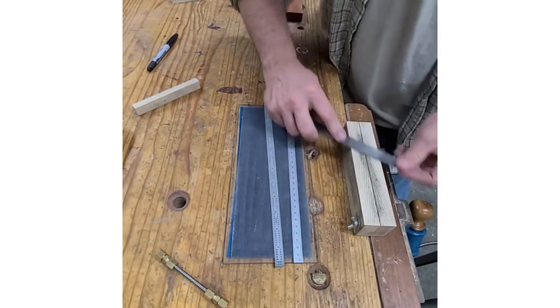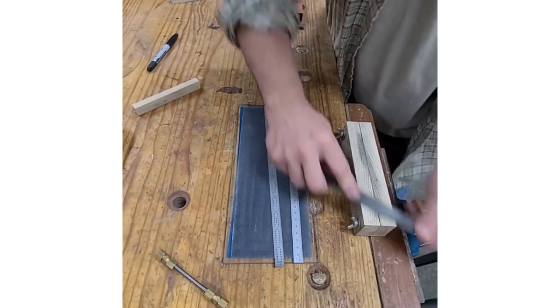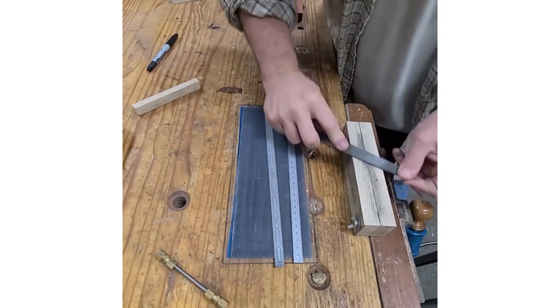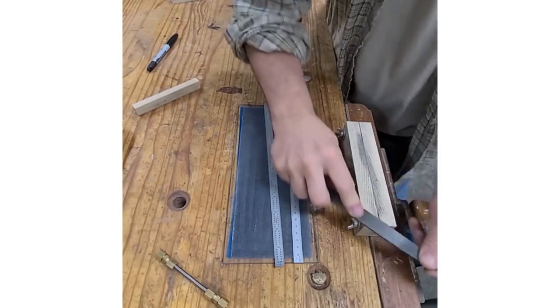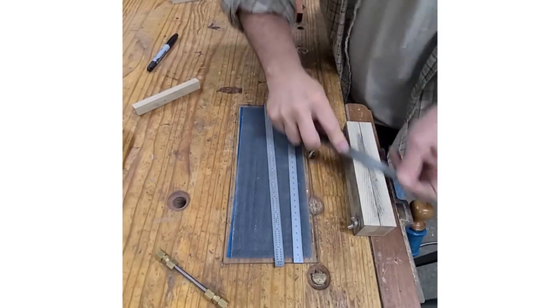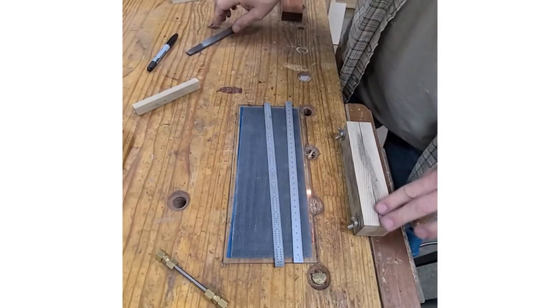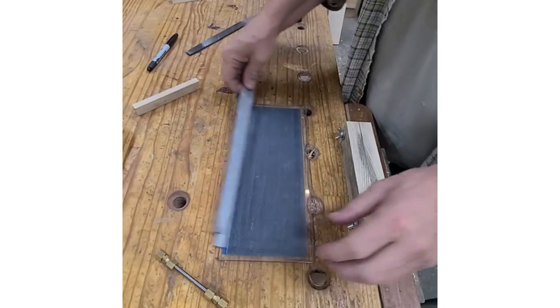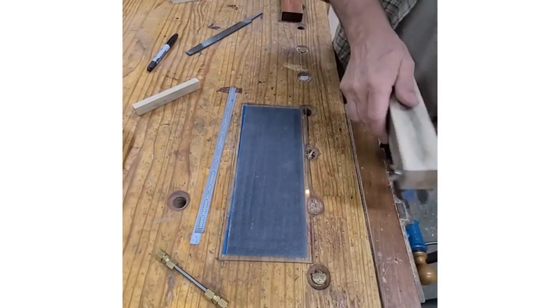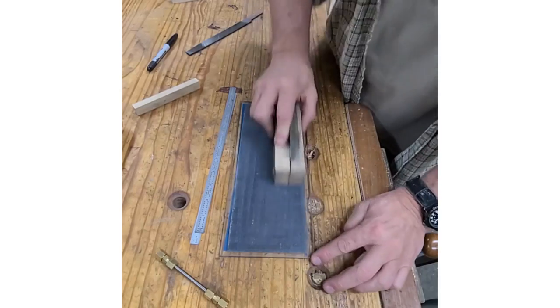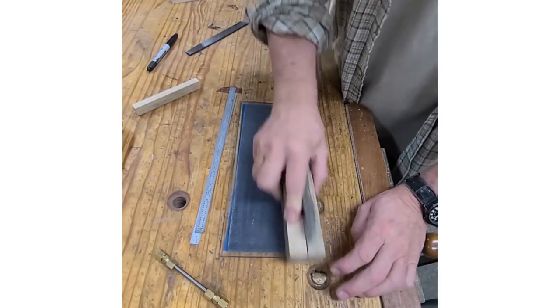I set my scraper on these two rulers and what this does is it helps me get an exact protrusion of the scraper above the vise, 20 thousandths, so I can feel it, it's nice and consistent. I'm going to drop that thing in my vise and file it. Basically you just want to file it till you get fresh steel all the way along. This is a brand new scraper so I got to take a little bit more off. Okay, got it, so now I see fresh steel all the way along.